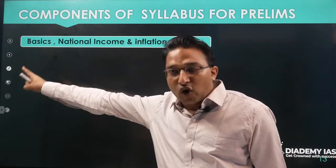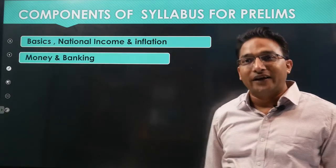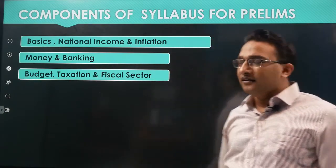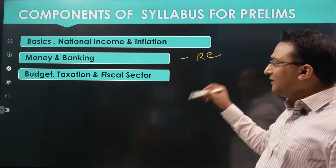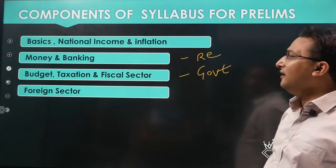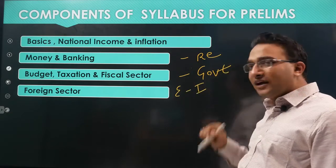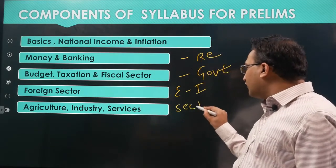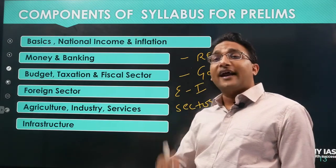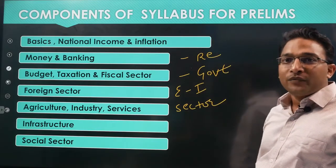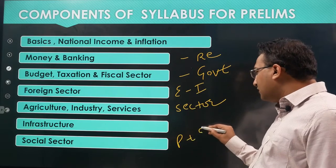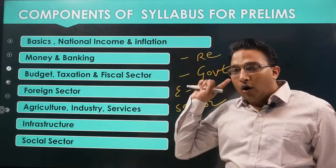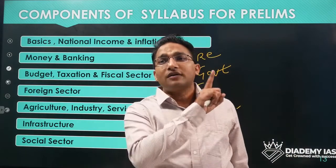Budget and taxation cover the flow of money and government finances. The foreign sector covers exports, imports, and remittances. Agriculture, industry, and services are the different sectors of the economy. Infrastructure includes transport, energy, roads, and oil. The social sector includes poverty, unemployment, and sanitation. These are the major components of the syllabus, identified based on previous year questions.